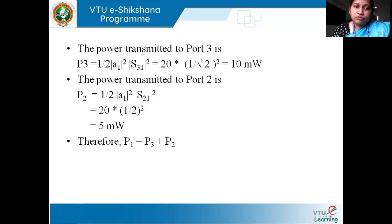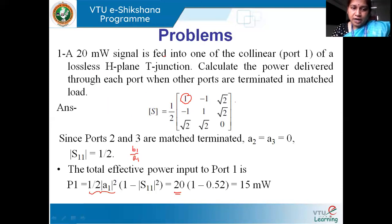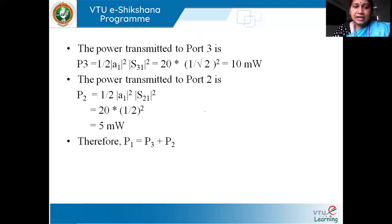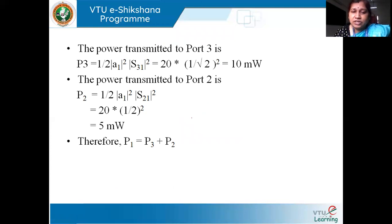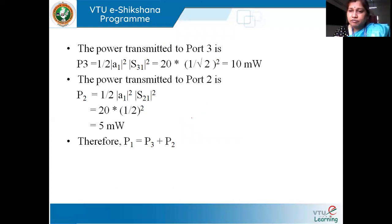So to summarize: P2 = 5 milliwatts, P3 = 10 milliwatts, and P1 = 15 milliwatts. We can verify that P1 = P2 + P3, i.e., 15 = 5 + 10. That is one of the characteristics of the H-plane T-junction which we already discussed — when input is given at port two and port three, the output at port one is additive in nature.